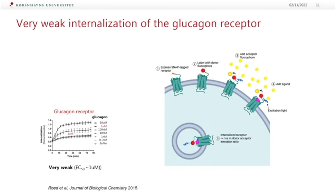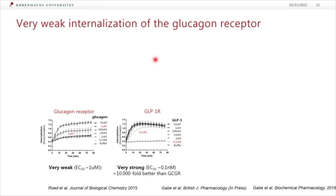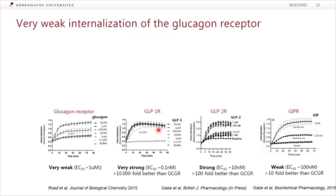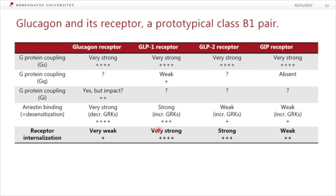How is the glucagon receptor internalized? It has been published before, but it is very, very weak in its internalization. We need up to one micromolar to get any kind of internalization using this SNAPTACT assay, where we can follow receptor internalization in real time. Comparing that with the GLP-1 receptor, at 0.1 nanomolar we see almost full internalization — much stronger than the glucagon receptor. GLP-2 is somewhat weaker but still okay, and GIP is also quite weak in its internalization. They might look similar, but they are very different in receptor internalization.